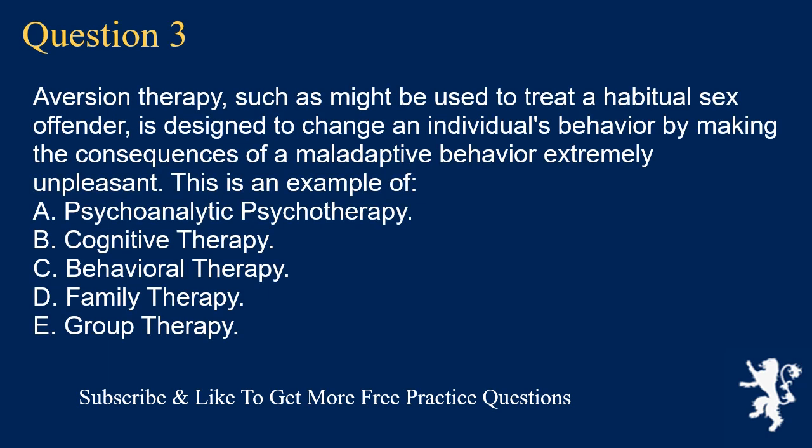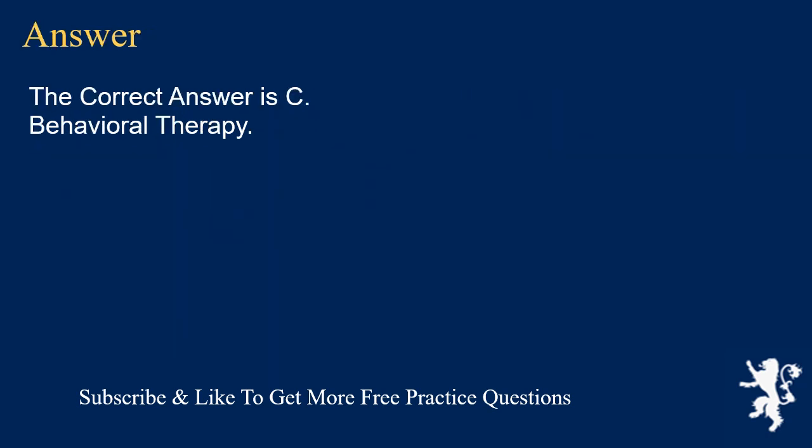Question 3. Aversion therapy, such as might be used to treat a habitual sex offender, is designed to change an individual's behavior by making the consequences of a maladaptive behavior extremely unpleasant. This is an example of: A. Psychoanalytic psychotherapy. B. Cognitive therapy. C. Behavioral therapy. D. Family therapy. E. Group therapy. The correct answer is C. Behavioral therapy.